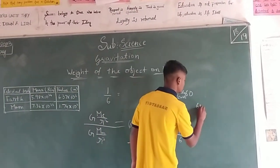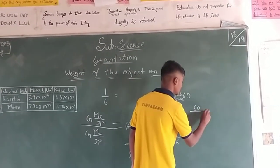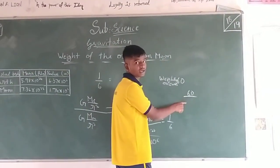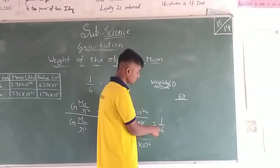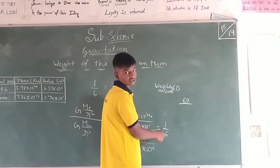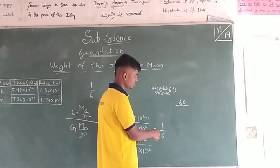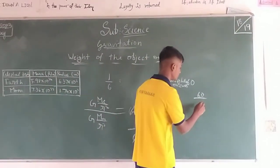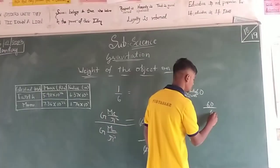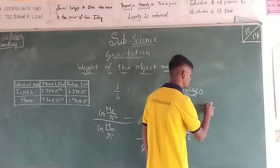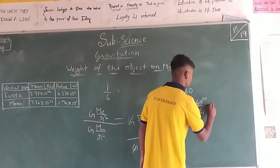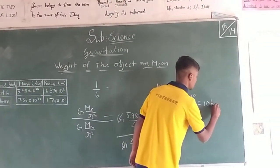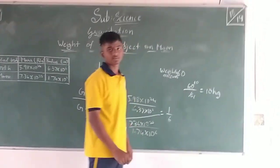We will divide it — divide 60, the weight of the object on earth, by 6. If we solve this, we get the weight of the object on the moon. The weight of the object on moon is 10 kg.